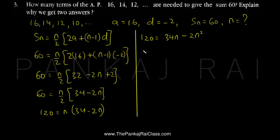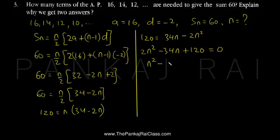Let us bring everything on the left hand side. So minus 2n squared becomes 2n squared, 34n becomes minus 34n, and 120 stays as plus 120, on the right hand side we have 0. All terms can be divided by 2, so it becomes n squared minus 17n plus 60 equals 0. This is the quadratic equation we have to solve.